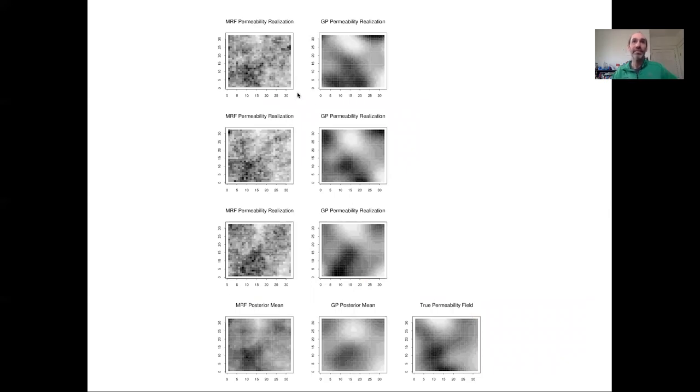Moving on, this is again a simulated data experiment with a true permeability field. In this case, it's down here in the bottom right corner. But now we're going to start with a much less simple permeability field. So one that is more likely to be realistic, not just a simple gradient, but a more complex spatial pattern.